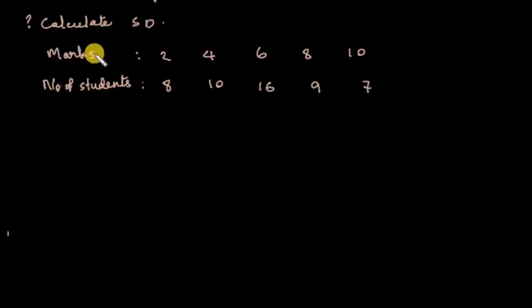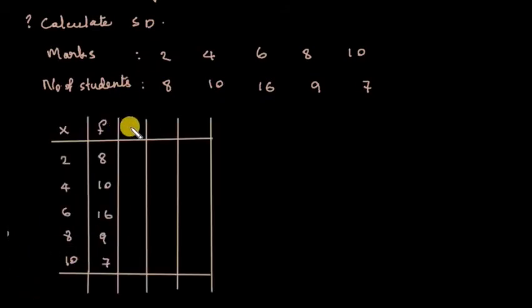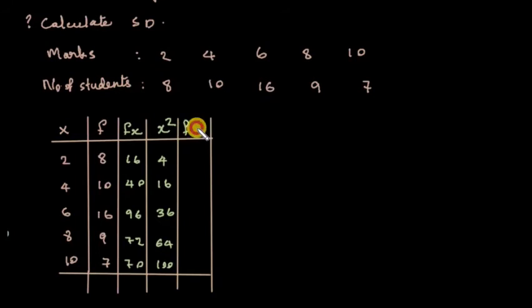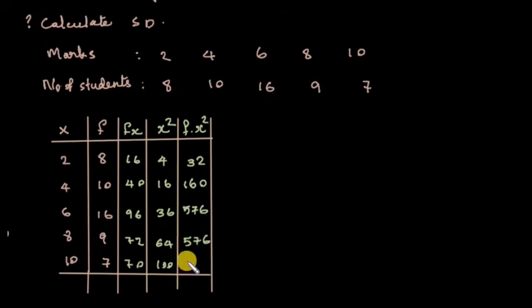The problem is to calculate standard deviation where marks is x and number of students is frequency. We find fx values: 16, 40, 96, 72, and 70. Then x² values: 4, 16, 36, 64, and 100. Then fx² values: 32, 160, 576, and so on.